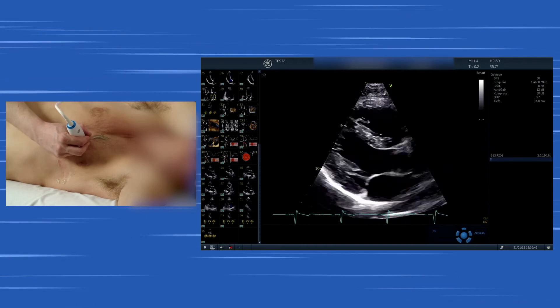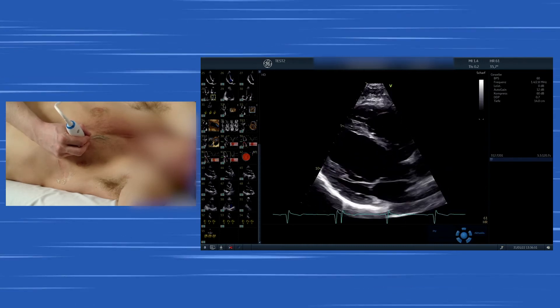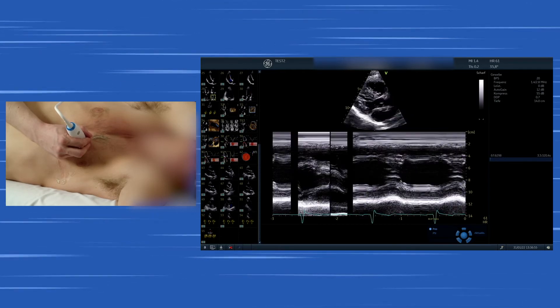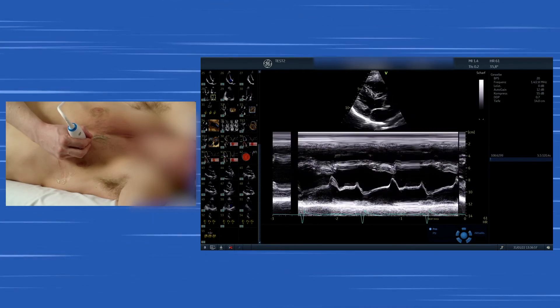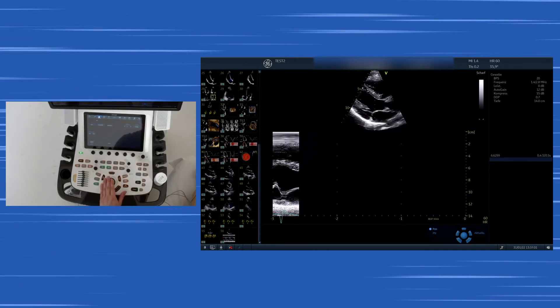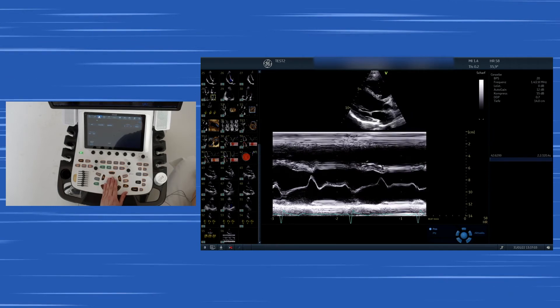Now we want to start with the M mode. The M mode can be used on several planes in the parasternal long axis. This is the view of the mitral valve. We also can take a look at the aortic valve and visualize the aortic valve in the parasternal long axis view as well.